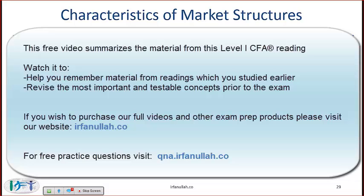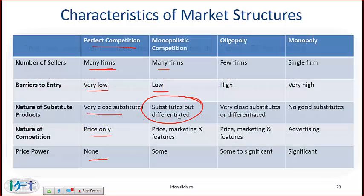In monopolistic competition we still have many firms but often less than in perfect competition. Barriers to entry are again low. The big distinction is that in monopolistic competition there are substitutes but there is also some differentiation. A classic example would be toothpaste, where one toothpaste is a reasonable substitute for another but every toothpaste company will try and say why its toothpaste is special.